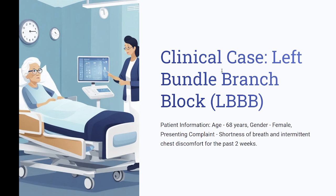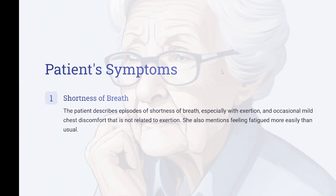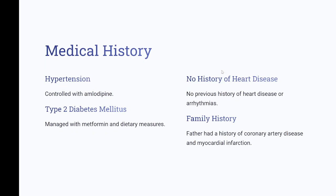Clinical case: left bundle branch block (LBBB). Patient: 68-year-old female. Presenting complaint: shortness of breath and intermittent chest discomfort for the past two weeks. The patient describes episodes of shortness of breath especially with exertion and occasional mild chest discomfort not related to exertion, along with increased fatigue. Medical history: hypertension controlled with amlodipine; type 2 diabetes mellitus managed with metformin and dietary measures; no previous history of heart disease or arrhythmias. Family history: father had coronary artery disease and myocardial infarction.